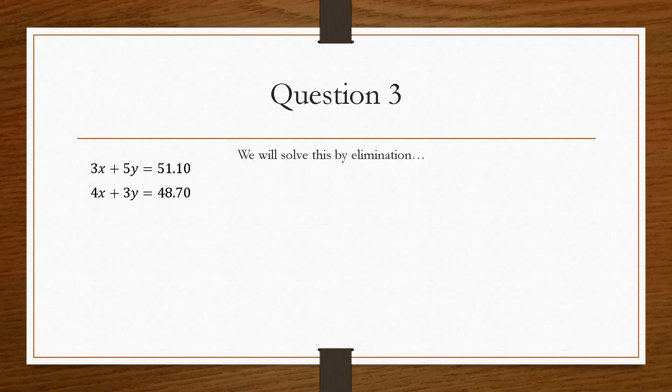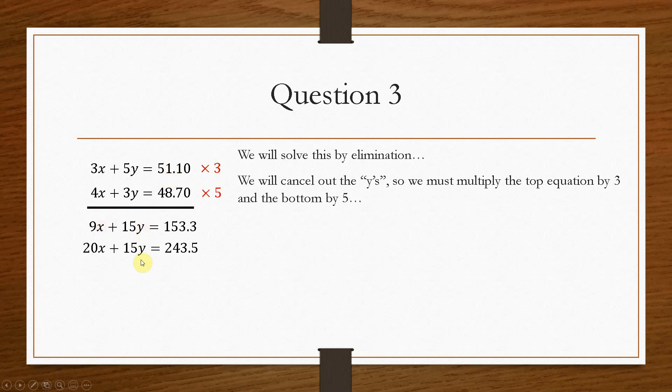Now we will solve these by elimination for part B. So here we can't just cancel out the y's by themselves because they are different. So what we'll do is we'll scale them up. So we'll times this whole equation here by 3 and this whole equation by 5. That way, we get the same value of y on that equation and that equation. So now that they are the same, we can now take them away from each other.